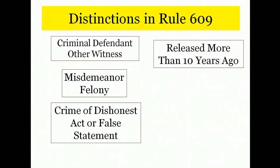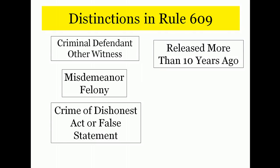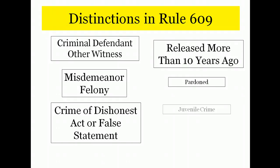Fourth, the timing of the crime is also considered by the rule — convictions that are more than 10 years old are far less likely to be admitted. The rule also contains two other distinctions which we will not be covering in class. First, crimes that have been pardoned are less likely to be admitted for impeachment purposes, and juvenile crimes are less likely to be admitted for impeachment purposes. There are separate subsections in the rule for these points, but they come up very infrequently and we will not be studying them in this class.